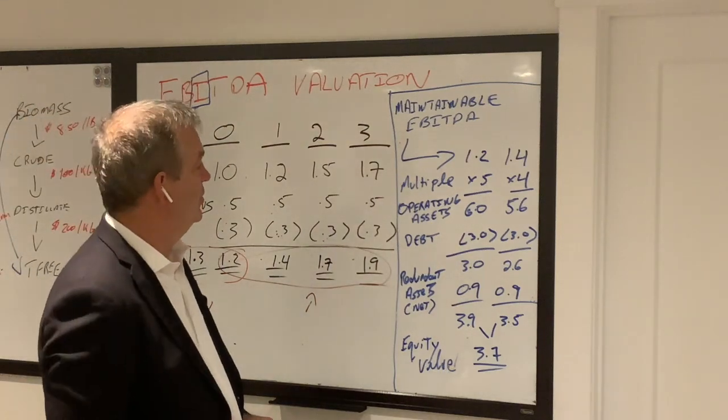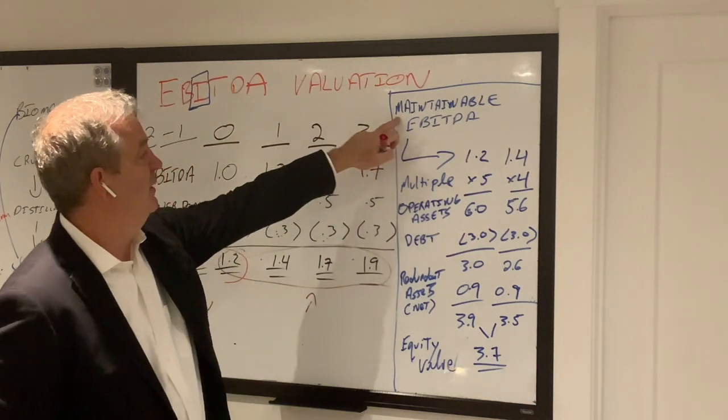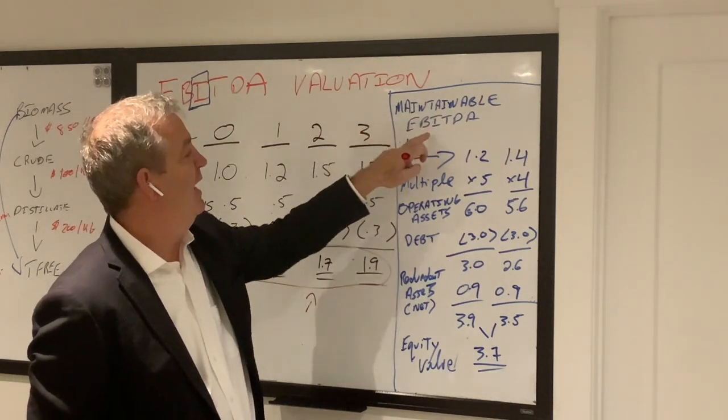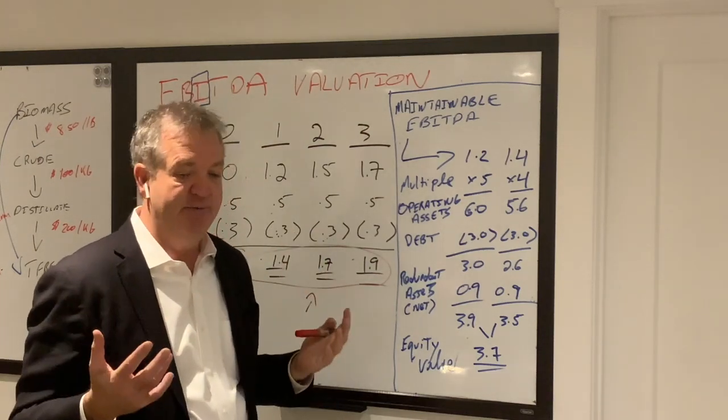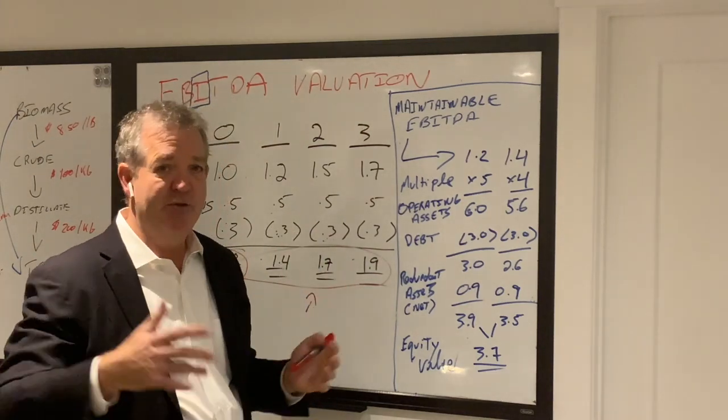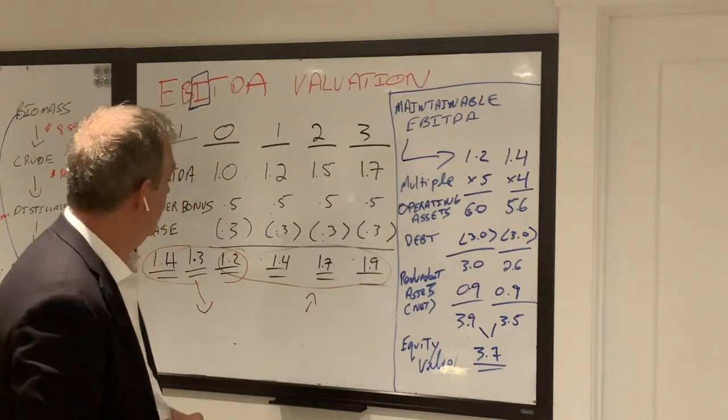Okay, valuation. So the first thing you want to do is you can't use every one of these numbers. You have to take, you have to figure out, estimate what is called a maintainable EBITDA. In other words, this business, your business will do this amount of EBITDA pretty much forever into the future. It's a maintainable number. So what would that be?